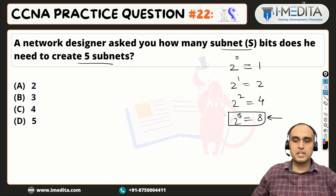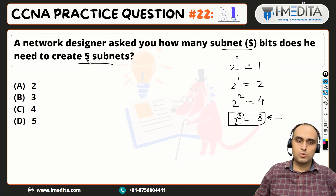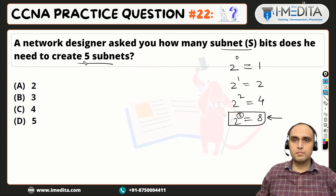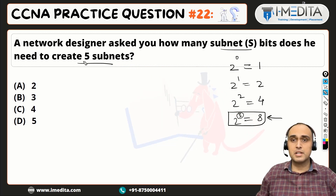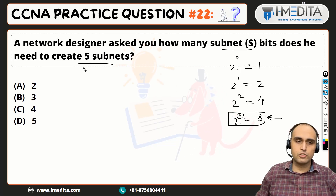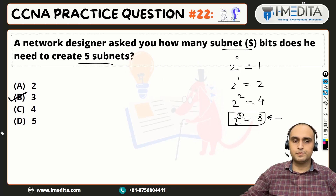Because 8 subnets satisfies our requirement of 5, it means we need to take 3 subnet bits, which will satisfy the requirement. So the right answer to this is option B.